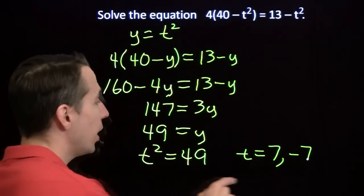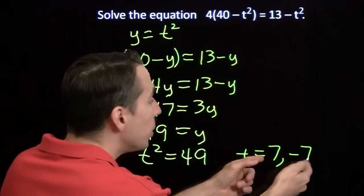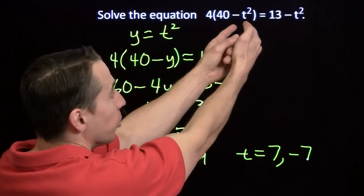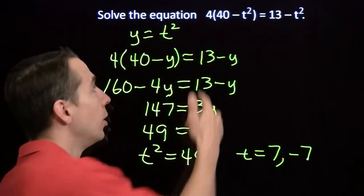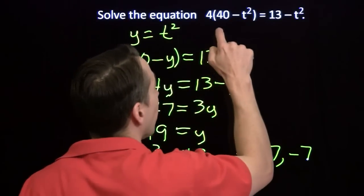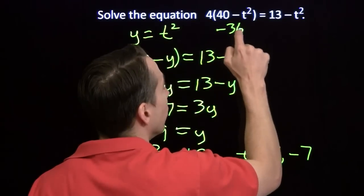Of course, we can test that. Let's go ahead and test that. Whichever one we put in here, 7 or negative 7, when we square it, we get 49. Minus 49 is negative 9 times 4 is negative 36.